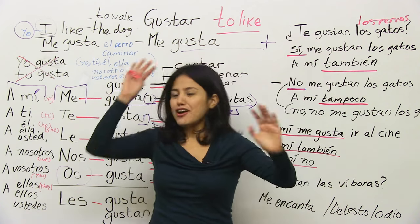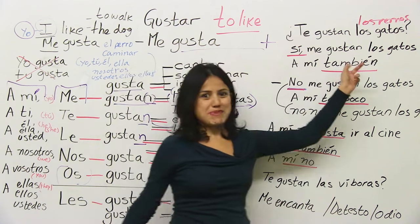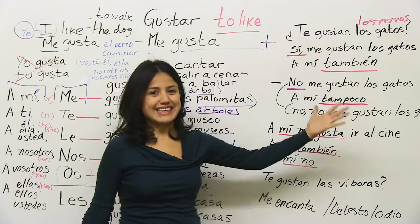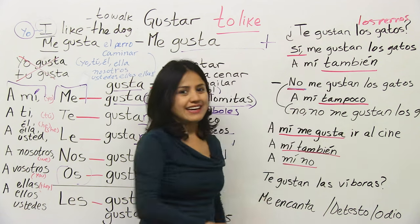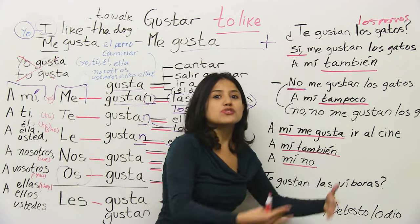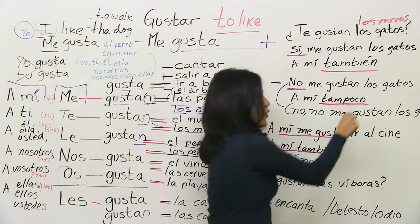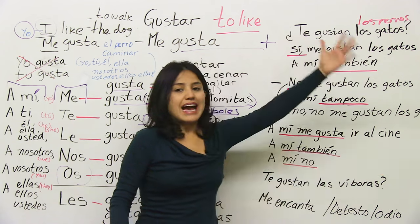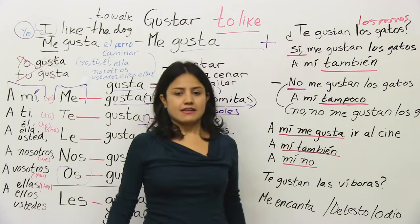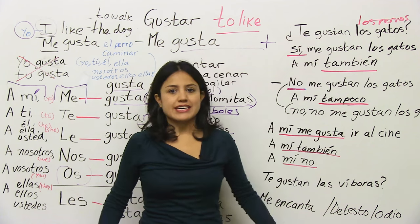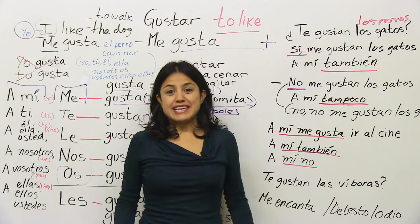If the person said 'sí, me gustan los gatos' — yes, I like cats — and you agree, you say 'a mí también.' But if someone says no and you also don't like them, you say 'a mí tampoco.' The rule: if it's a positive statement and you agree, use 'también.' If it's a negative statement and you agree, use 'tampoco.'